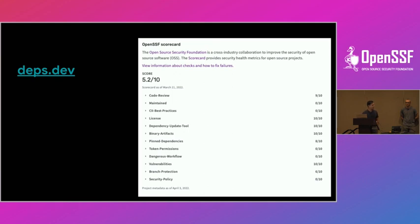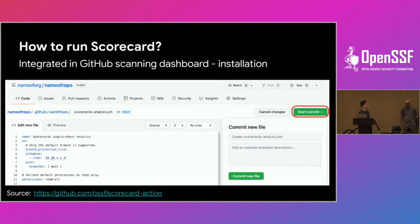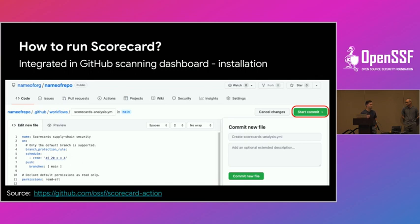What you see on the right side are all the Scorecard checks. You can also utilize Scorecard for your own projects. Scorecard has a GitHub Action that you can install and it'll run for your GitHub project, figuring out best practices and what's failing. The action runs on two different settings: one is a cron job, and another triggers on every push to your repository. All results are stored within GitHub Code Scanning.